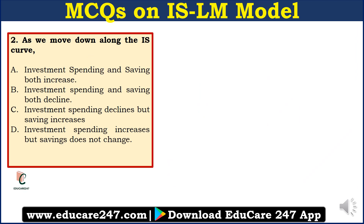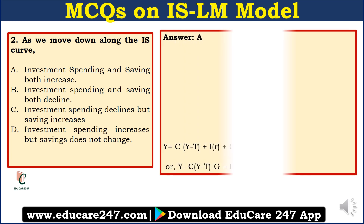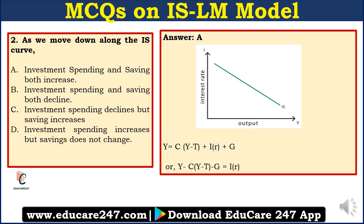Moving on to question number 2: As we move down along the IS curve — Option A: investment spending and saving both increase; Option B: investment spending and saving both decline; Option C: investment spending declines but saving increases; Option D: investment spending increases but saving does not change. The answer is A — investment spending and savings both increase. As we established, whenever there is a fall in the interest rate, there will be an increase in investment, because the IS curve is downward sloping and interest rate and investment are inversely related. But what about savings?